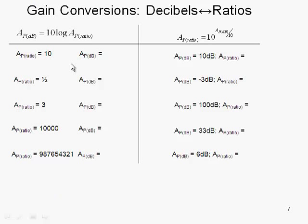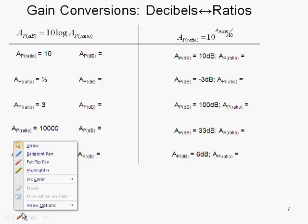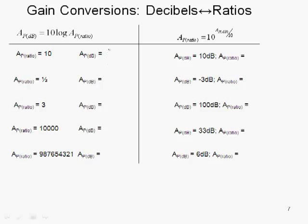So here's some examples. I'll do a few of these examples of converting from ratios into decibels. They're representing the same amount of gain just in a different form. A gain of 10 in ratio - we plug number 10 into our conversion, 10 log 10. Log of 10 is 1, so a gain of 10 as a ratio is the same as 10 decibels. If we have a gain ratio of a half, plug in the half into this equation: 10 log of a half equals negative 3 decibels.